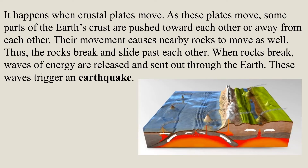A tectonic earthquake happens when crustal plates move. As these plates move, some parts of the earth's crust are pushed toward each other or away from each other. Their movement causes nearby rocks to move as well. Thus, the rocks break and slide past each other. When rocks break, waves of energy are released and sent out through the earth, and these waves trigger an earthquake.